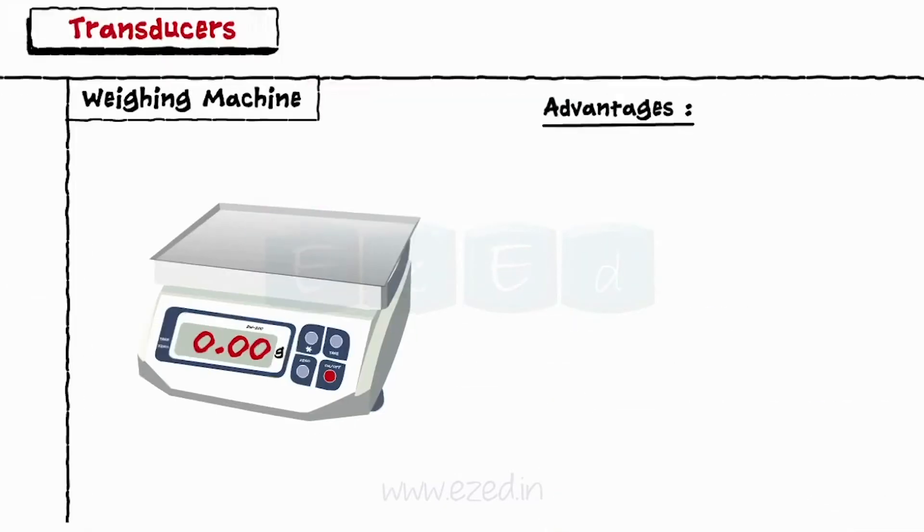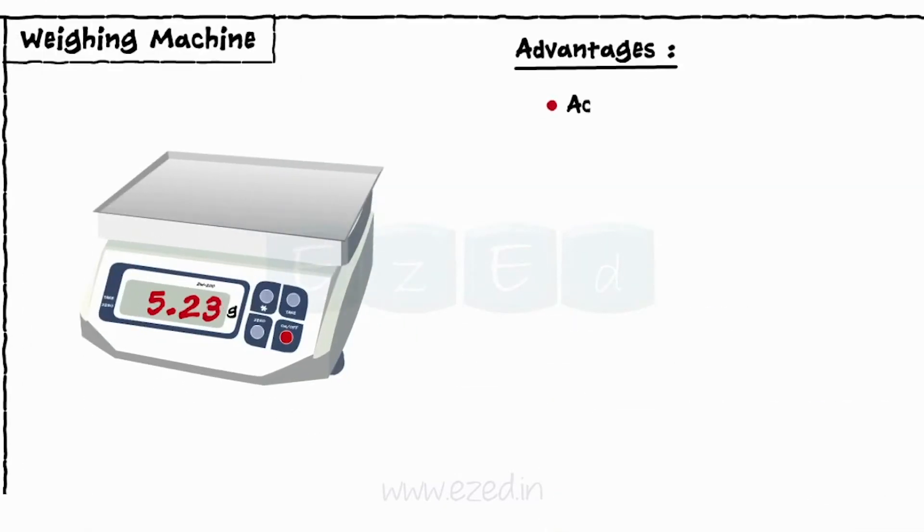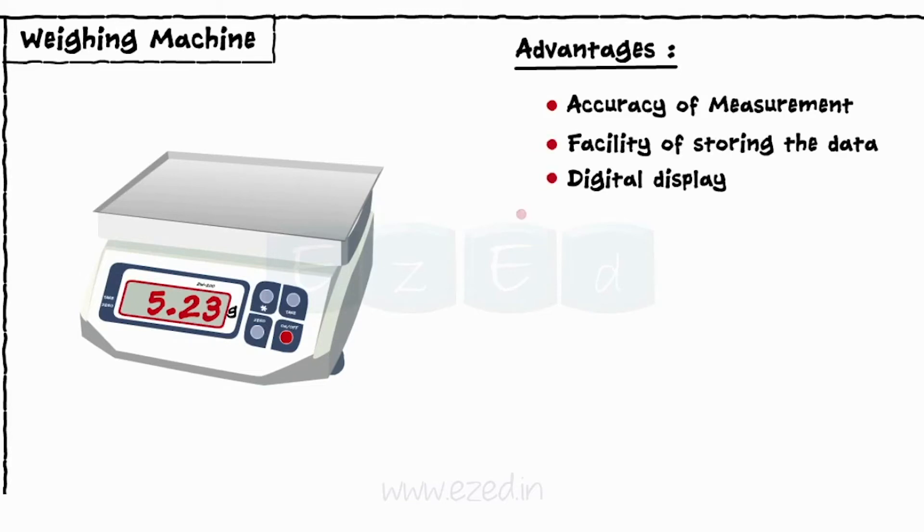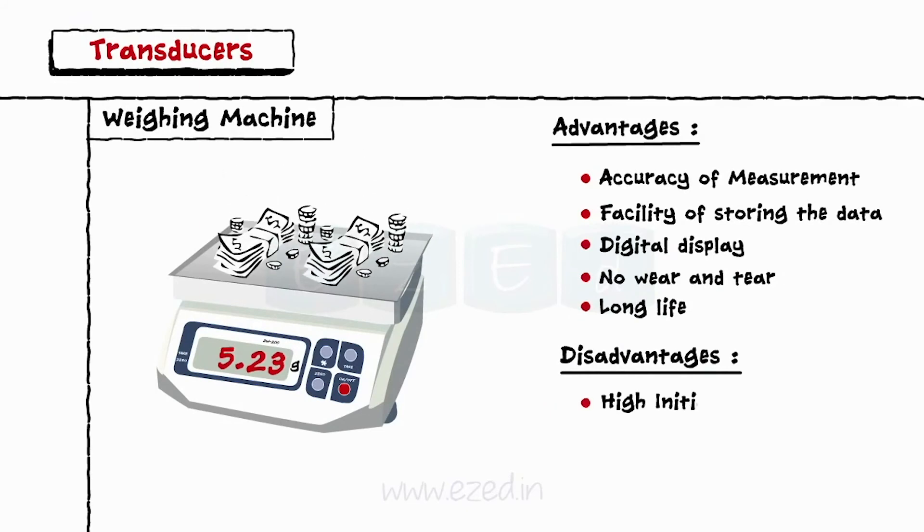The advantages of weighing machines are accuracy of measurement, facility of storing the data, digital display, no wear and tear, and long life. The only disadvantage of this machine is requirement of high initial cost.